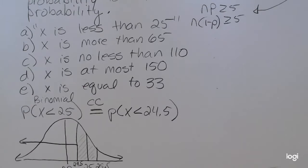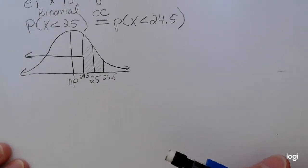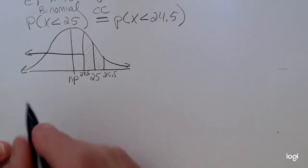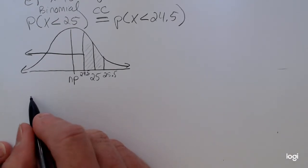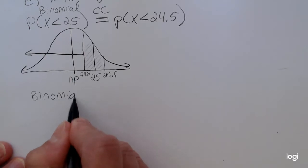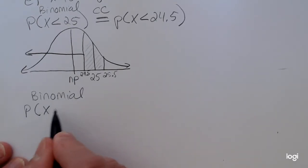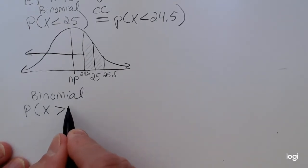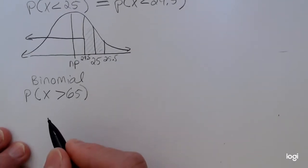From there, we would go ahead and either standardize or use the normal CDF to find the corresponding probability, using n times p as mu and the square root of n times p times q as sigma. Part B is x is more than 65. Expressing that as a binomial probability, that's the probability x is greater than 65. More than does not include the case of equality.